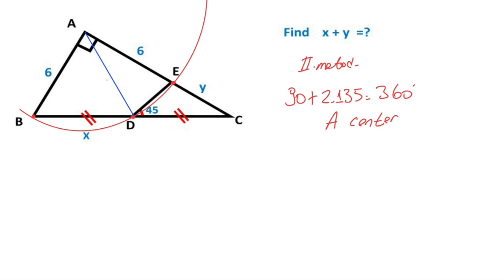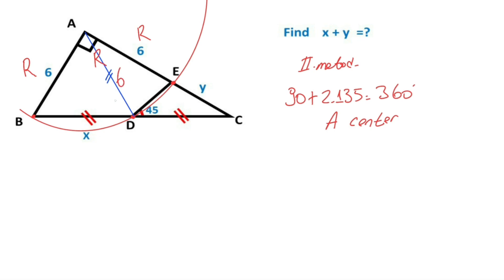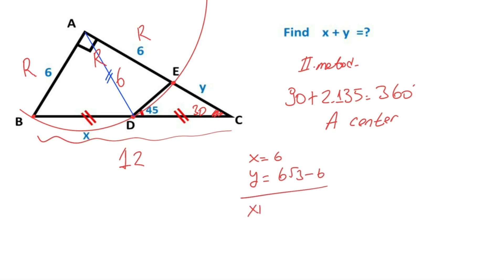These two parts are equal, meaning there must be equal marks here. These three sides must all equal the radius. So if here is a radius, the length of AD equals six units and the length of BC must equal 12 units. Therefore x equals six units, and here must equal 30 degrees, meaning y equals 6√3 minus 6. So x plus y equals 6√3.